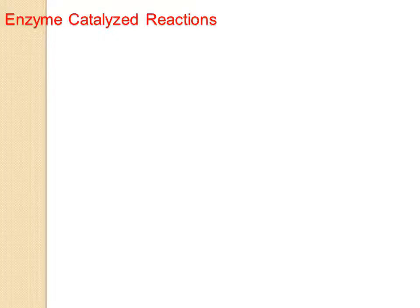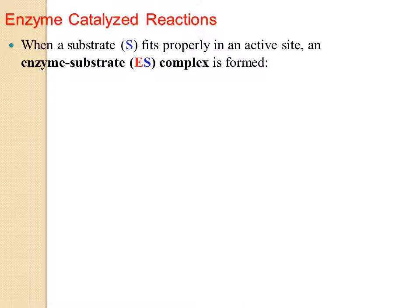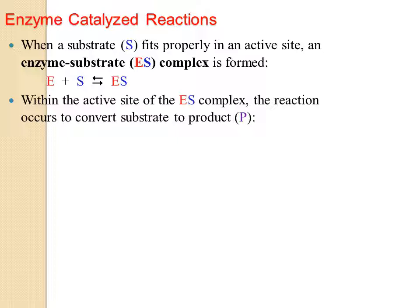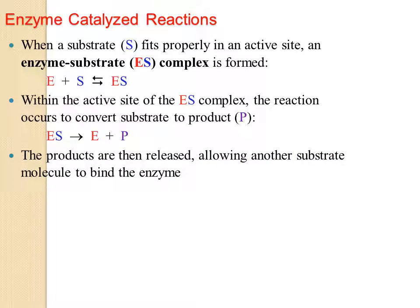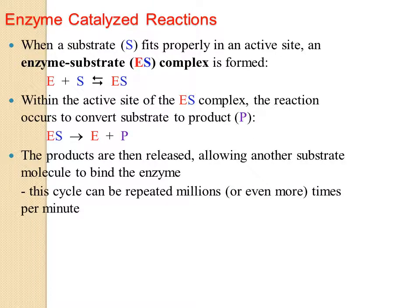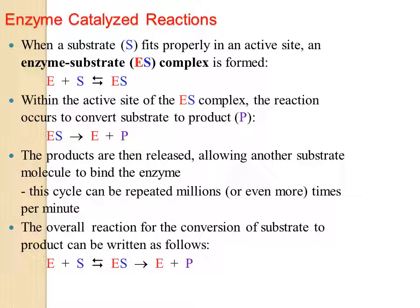Enzyme-catalyzed reaction: when a substrate fits properly into the active site, the enzyme-substrate (ES) complex is formed. Within the active site of this complex, the reaction occurs to convert the substrate to a product. The ES complex then breaks down into enzyme (E) plus product (P) — the substrate is converted from a reactant into a product. The products are then released, allowing another substrate molecule to bind the enzyme. This cycle can be repeated millions of times per minute.